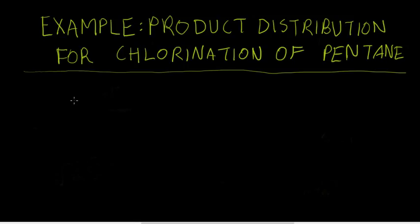In this video, we're going to be going over the product distribution for radical chlorination of pentane. Here's pentane — it's a 5-carbon alkane.